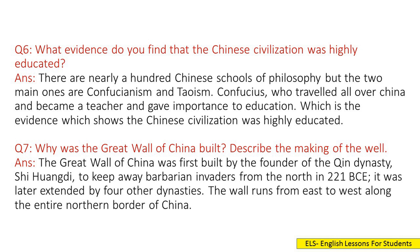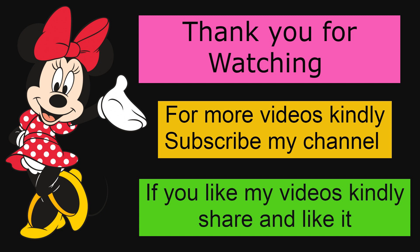Question 7: Why was the Great Wall of China built? Describe the making of the wall. Answer: The Great Wall of China was first built by the founder of the Qin dynasty, Chu Huang, to keep away barbarian invaders from the north in 221 BCE. It was later extended by four other dynasties. The wall runs from east to west along the entire northern border of China. Thanks for listening. For new videos, don't forget to subscribe to the channel.